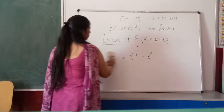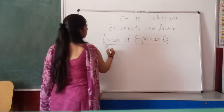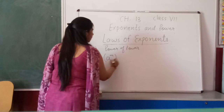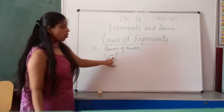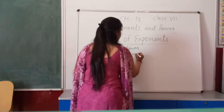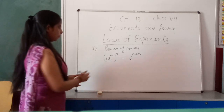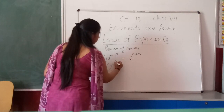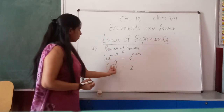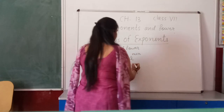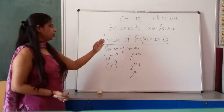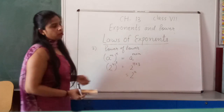The third law of exponents is power of a power, which means (a raised to power m) whole raised to power n. In this case we multiply both powers. The result is a raised to power (m × n). For example, (2⁴)³ = 2 raised to power (4 × 3) = 2 raised to power 12. This is the third law of exponents.